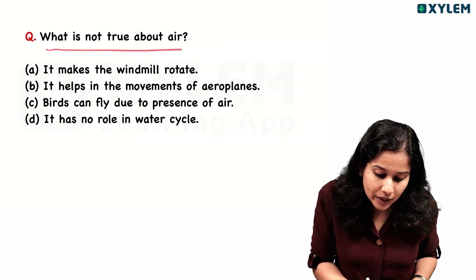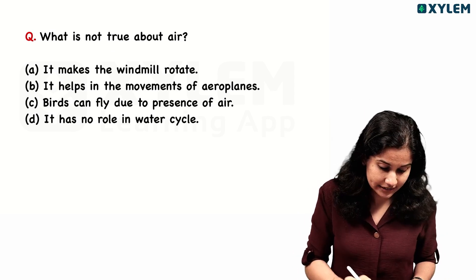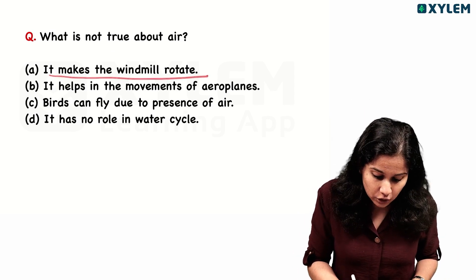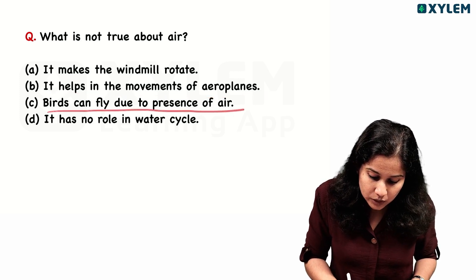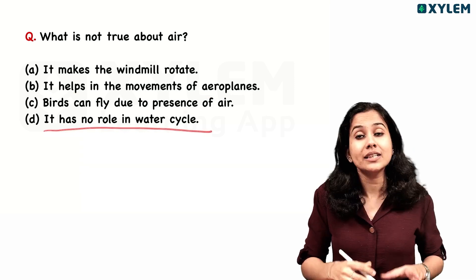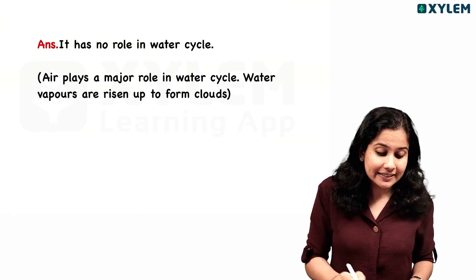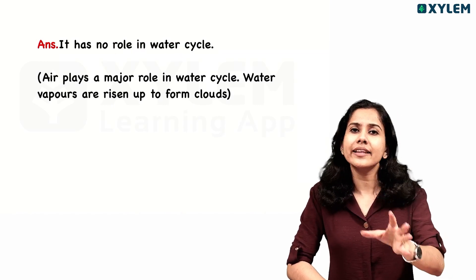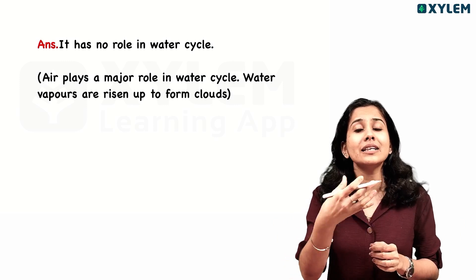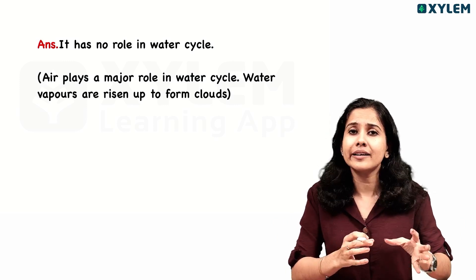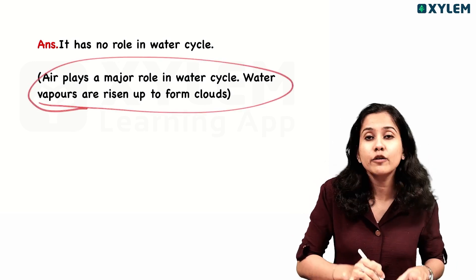What is not true about air? It makes the windmill rotate. It helps in the movement of aeroplanes. Birds can fly due to the presence of air. It has no role in the water cycle. The answer is that it has no role in the water cycle — that is the wrong statement. Air does play a role in the water cycle, as water vapor is a component of air and is involved in condensation.